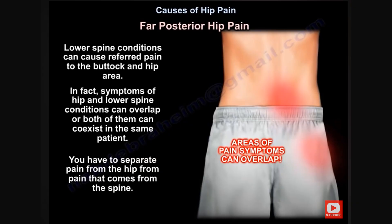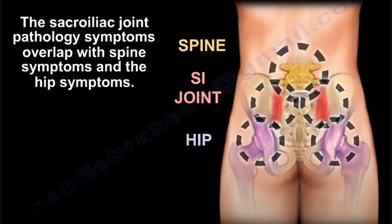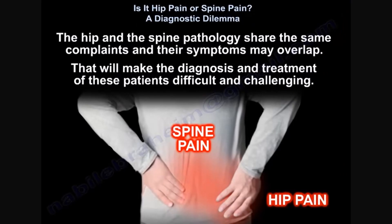Lower lumbar spine conditions can also cause referred pain to the buttock and hip area. Symptoms of hip and lower spine conditions can overlap, or both can coexist in the same patient. You have to separate pain from the hip from pain coming from the spine. Sacroiliac joint pathology symptoms overlap with both spine and hip symptoms. The hip and spine pathology share the same complaints, making diagnosis and treatment of these patients difficult and challenging.